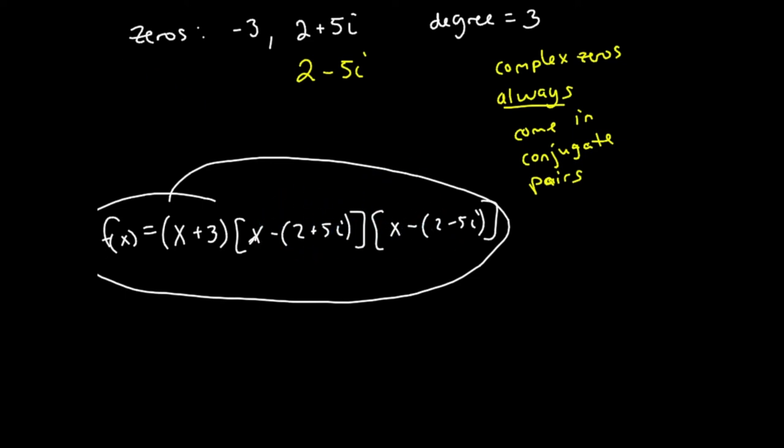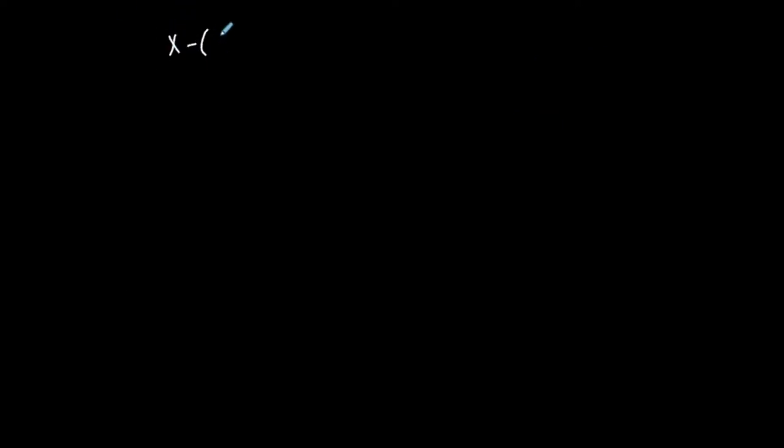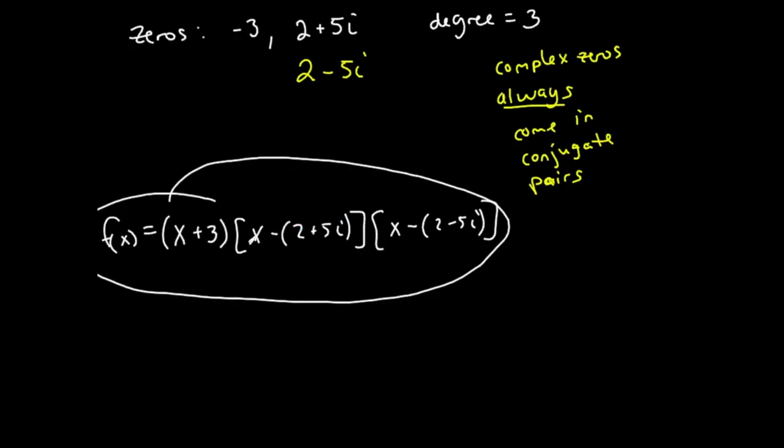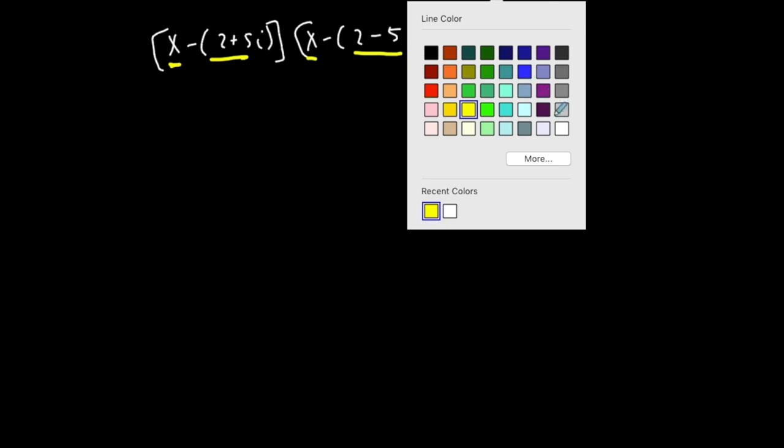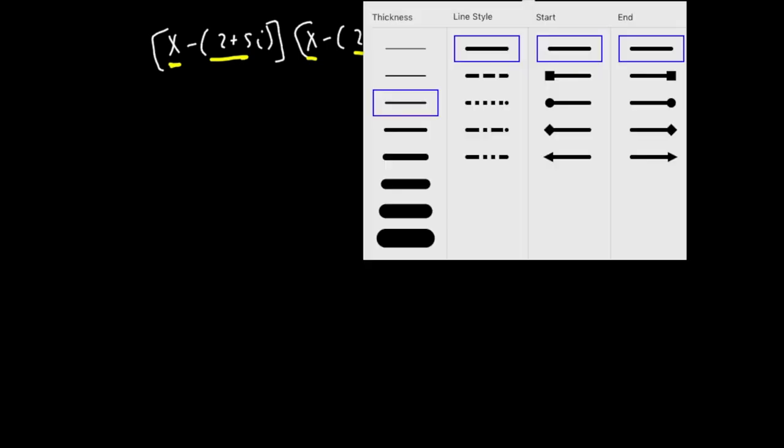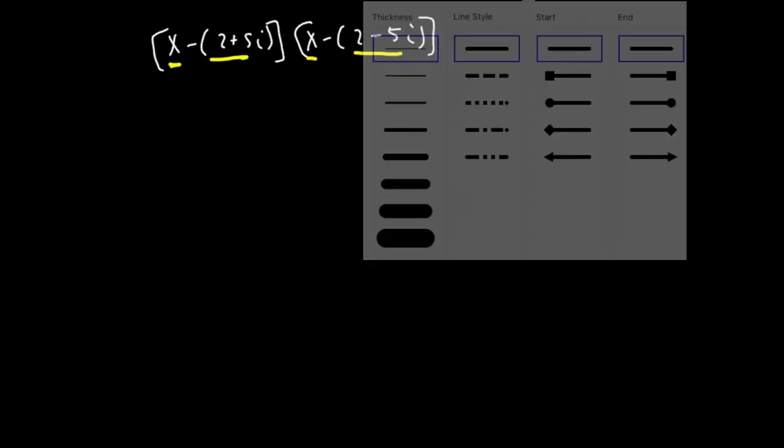So x minus two plus five i, and then x minus two minus five i. Let me double check: x minus two plus five i, x minus two minus five i. The way that you approach this is to FOIL, a binomial times a binomial.